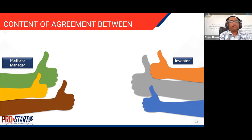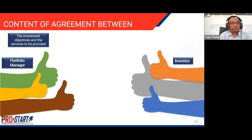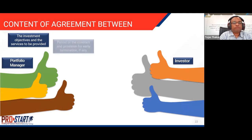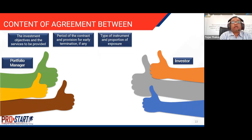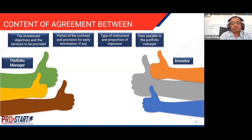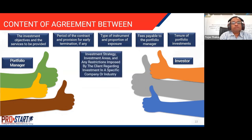The next step is the content of the agreement between the portfolio manager and the investor. The investment objectives and services to be provided are mandatory requirements and must be part of the agreement. It should also include the period of the contract and provisions for early termination, types of instruments, proportion of exposure to those investments, fees payable to the portfolio manager, the tenure of portfolio investments, investment strategies, and any restrictions imposed by the client regarding investment in a specific company or industry.